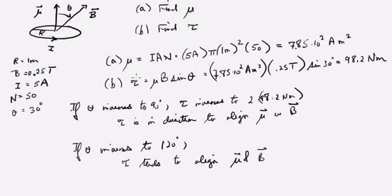To find the magnetic moment, that's simply the current times the area times the number of loops. We have 50 loops here, and so that's 5 amps, that's the current, times the area pi r squared, pi times 1 meter squared, times the number of loops 50. That works out to 785 amp meters squared for mu.